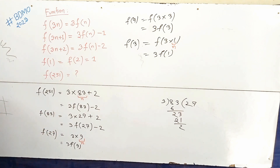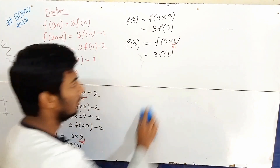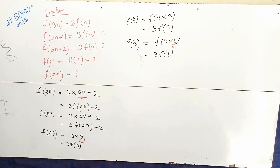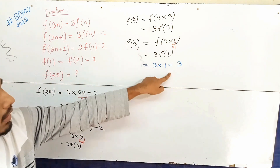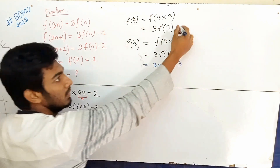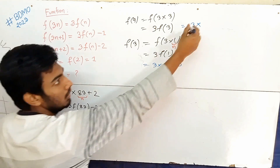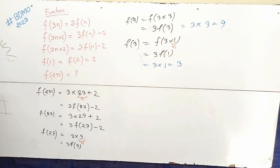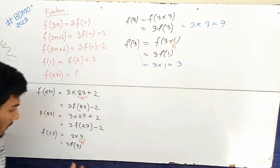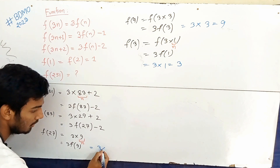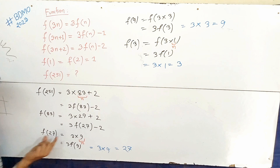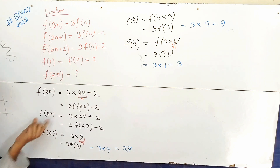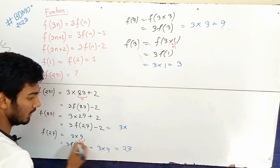So, 3f(1) = 3(1) = 3, therefore f(3) = 3. Then f(9) = 3f(3) = 3(3) = 9, so f(9) = 9. And f(27) = 3f(9) = 3(9) = 27.